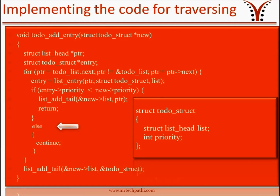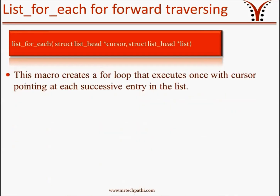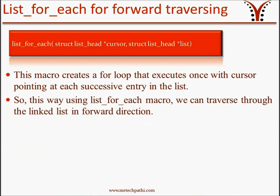Also, there is an optimized way to do it. To make it more comfortable, kernel programmers have introduced a new macro called list_for_each, which is a predefined macro for creating loops that iterate through the list. The previous logic of traversing a Linux linked list could be coded using this macro. The logic here is the same as the previous logic except we have introduced list_for_each instead of the manual for loop. This macro creates a for loop that executes once with the cursor pointing at successive entries in the list. Using the list_for_each macro, we can traverse through the linked list in the forward direction.